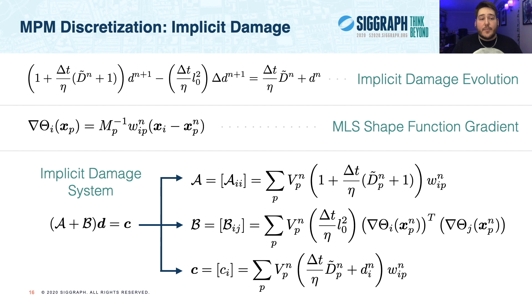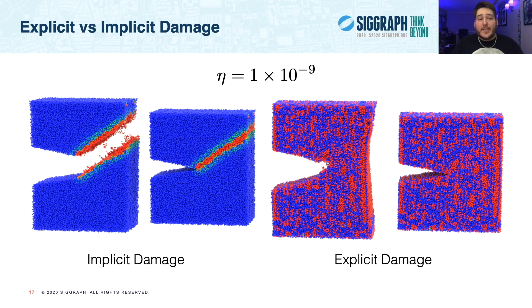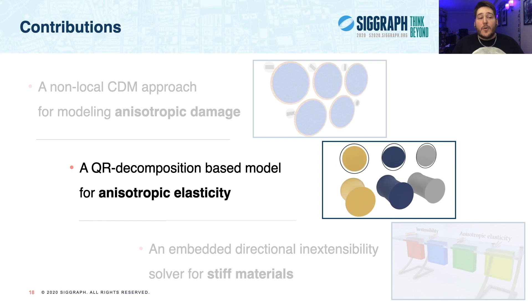In all of our main demos, we use explicit damage due to its speed, but we want to highlight where implicit damage really succeeds. Our explicit discretization includes a term where our time step is divided by eta, and as such very small eta values will break the CFL condition for explicit damage. So we show here an example where this happens. Implicit damage is able to beautifully resolve this extremely fast crack, while explicit damage explodes as soon as the critical stress is reached. So now that you have the core framework for an iso-MPM, let's dig into our anisotropic elasticity.